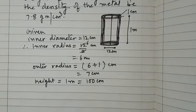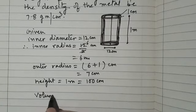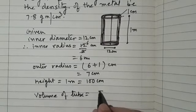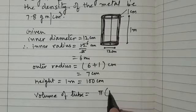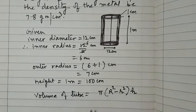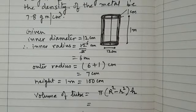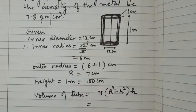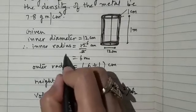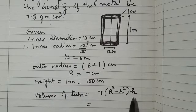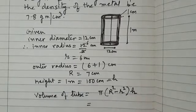Now we are going to find the volume of this tube. You know this is a hollow tube, so volume of tube will be equal to π(R² - r²)h, where capital R is the outer radius and small r is the inner radius, and height is 100 centimeters.